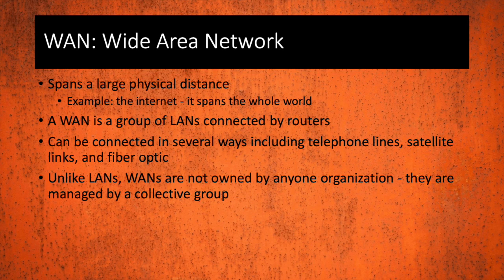WAN is wide area network. This spans a large physical distance. The best example of this would be the internet — it spans across the whole world. A WAN is a group of LANs connected together by routers, and they can be connected in several ways including telephone lines, satellite links, and fiber optic cables. Unlike LANs, WANs are not owned by any one specific organization; they're actually managed by a collective group.